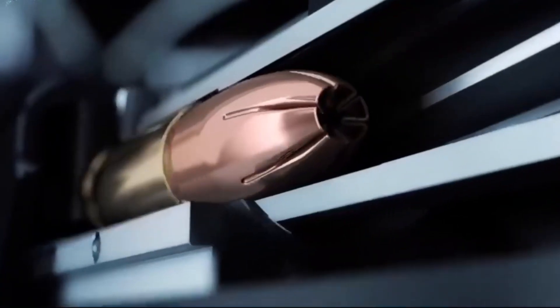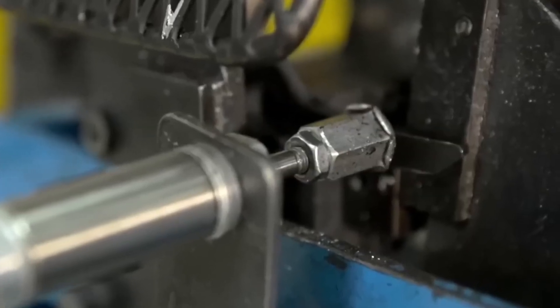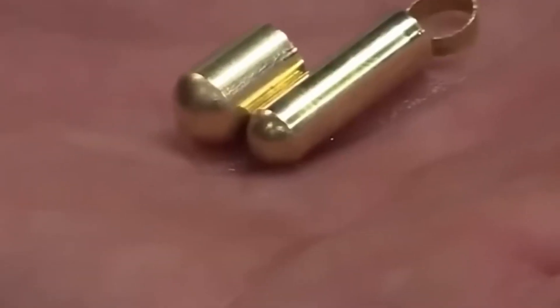Next comes one of the most critical operations. The machines punch a precisely sized hole in the case head to accept the primer and create the flash hole that will allow the primer's flame to reach the main powder charge.